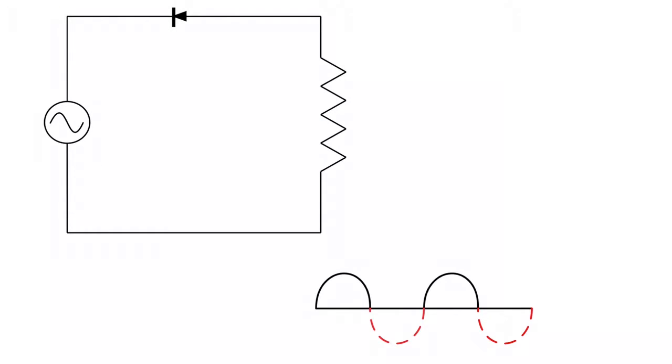So we get what's known as a pulsating DC. You have a pulse of DC, then nothing, a pulse of DC, then nothing. And that is how we achieve half-wave rectification with a single diode.